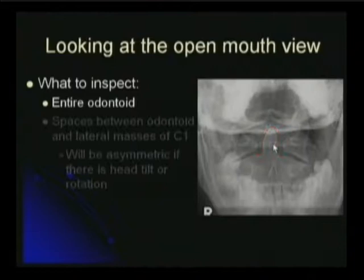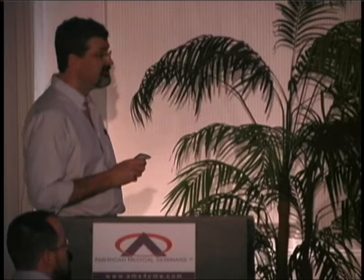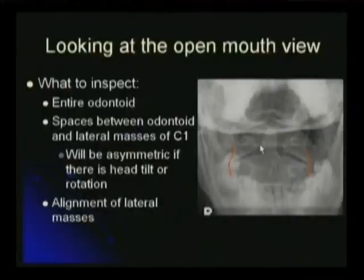You want to look at the spaces between the edge of the odontoid and the edge of the lateral mass. These spaces here should be symmetric, but that's very touchy. The patient has to be perfectly straight to get a nice symmetric view of that. If the patient has a little bit of head rotation or a little bit of tilt, that will throw off that symmetry. So if you see asymmetry, you want to look and assess whether the patient is nice and straight. You also want to look at the alignment laterally out here.